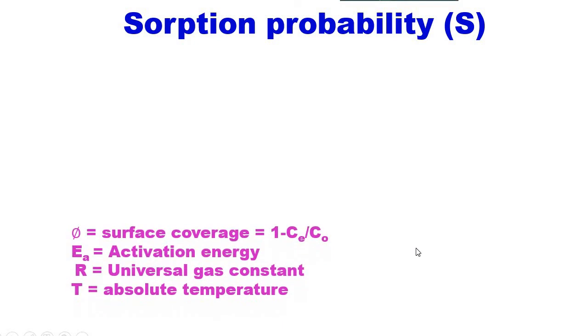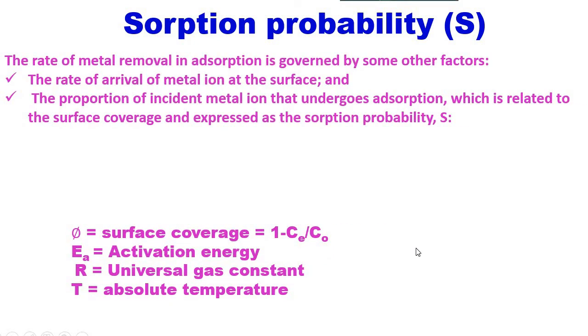Then comes sorption probability. Sorption probability can be written as S equals (1 minus θ) exponential minus Ea divided by RT, where θ is the surface coverage, Ea is the activation energy, R is the universal gas constant, T is absolute temperature.